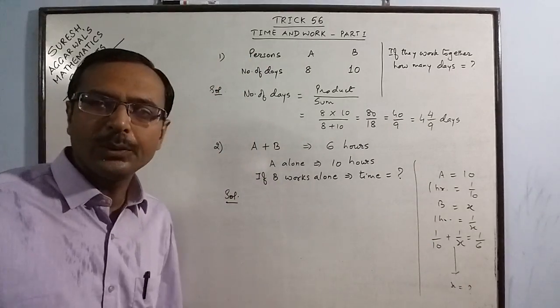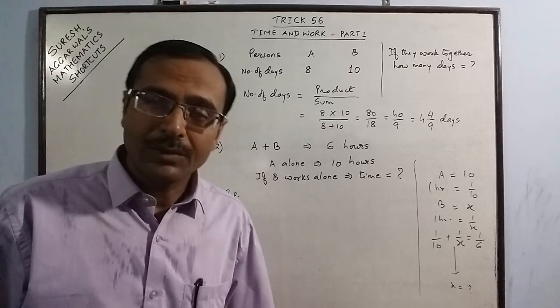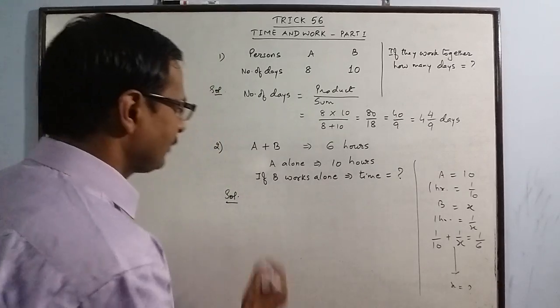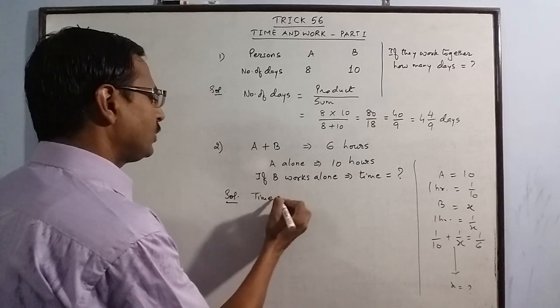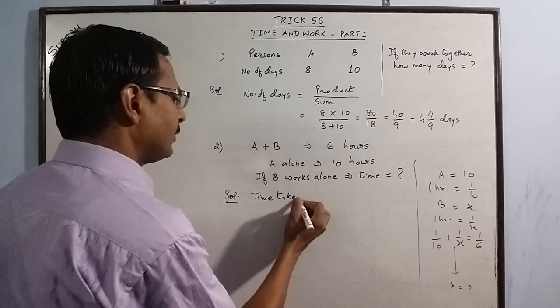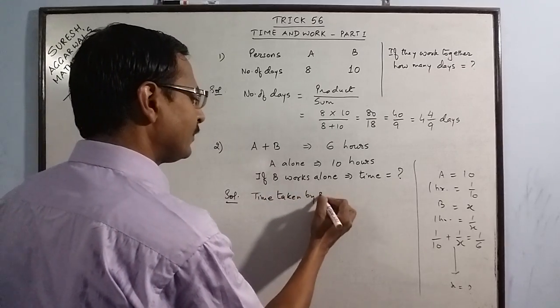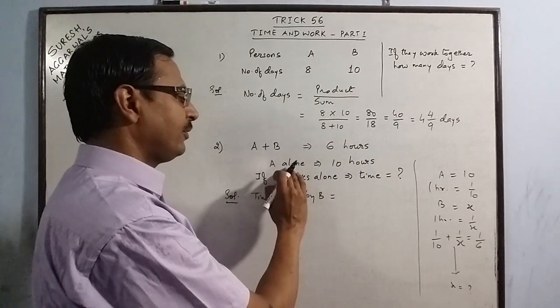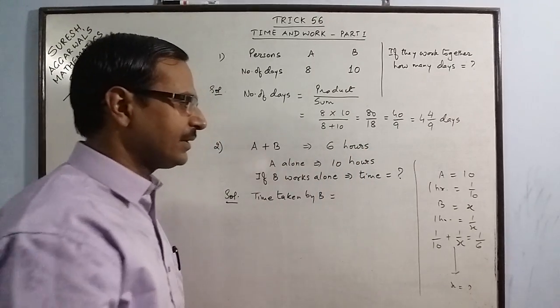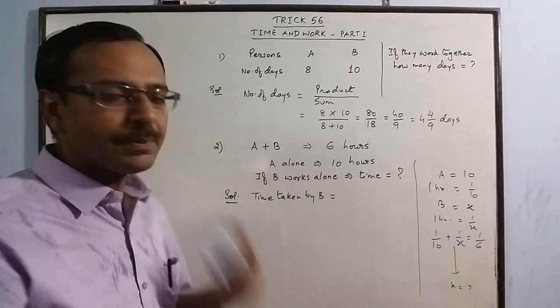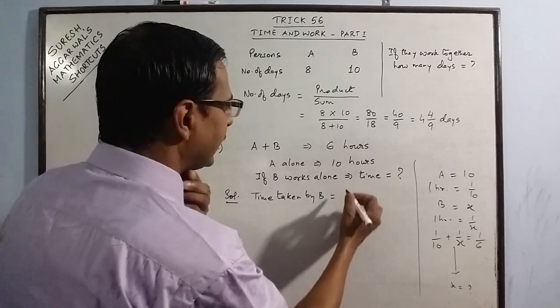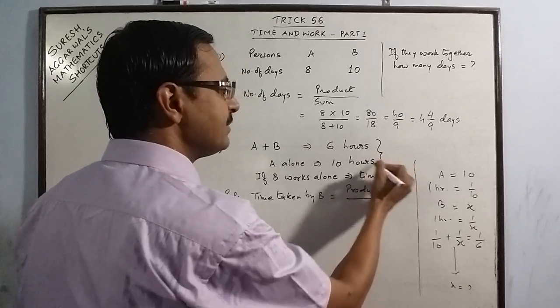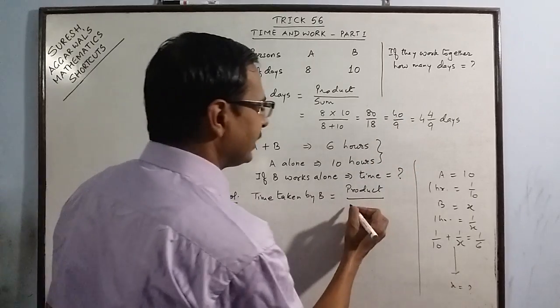But through this method which I am going to tell you, you can solve this question in a matter of 3 seconds only. Now here you are required to find the time taken by B. When the combined time is given and time taken by one of them is given, the time taken by the other person is found out by taking the product of the two times, given times and dividing it by the difference.